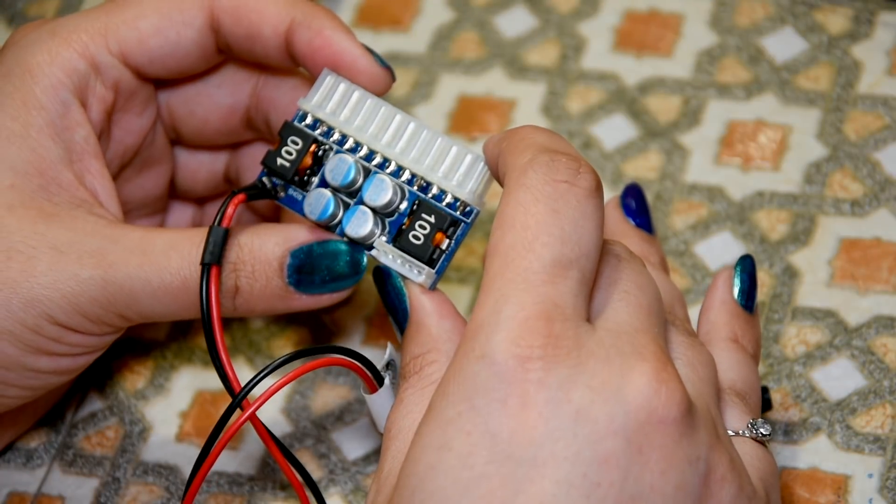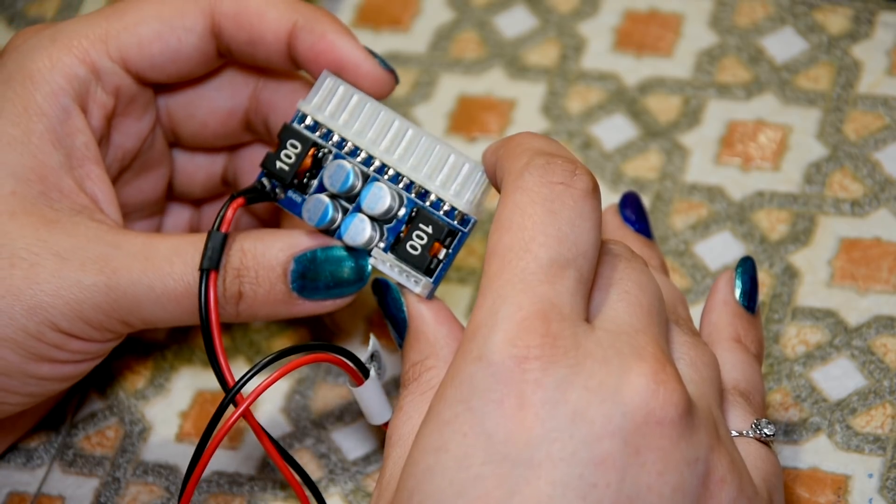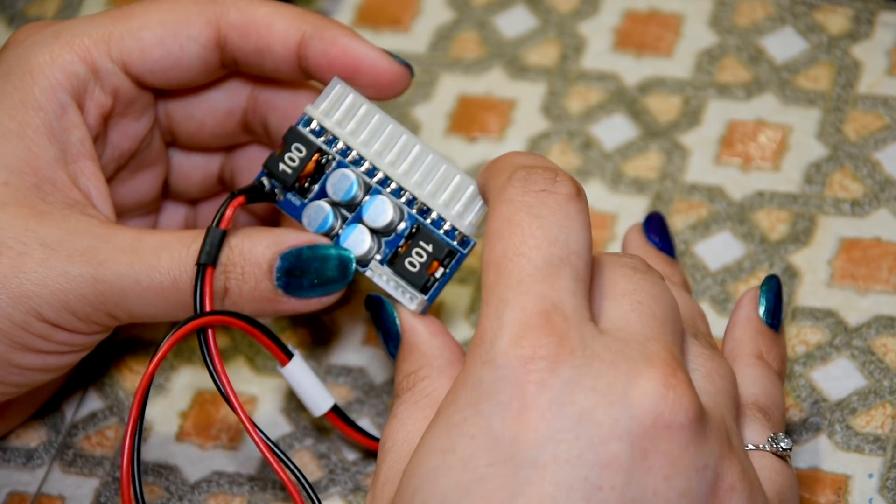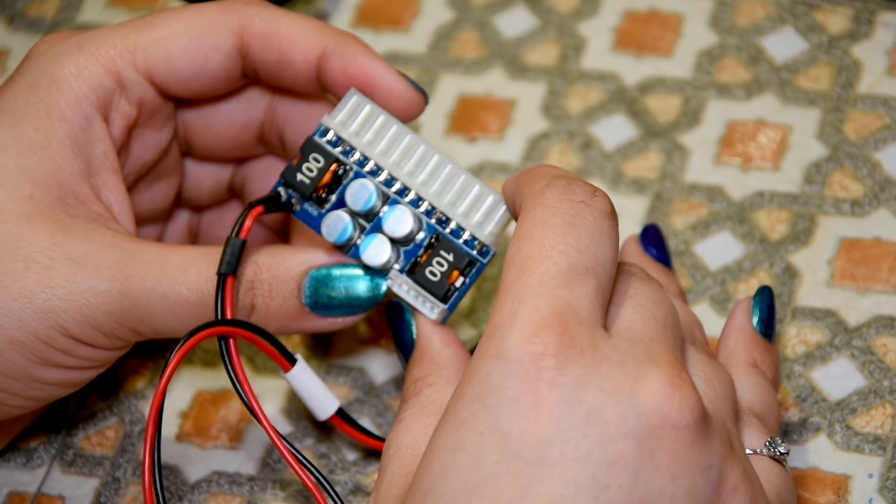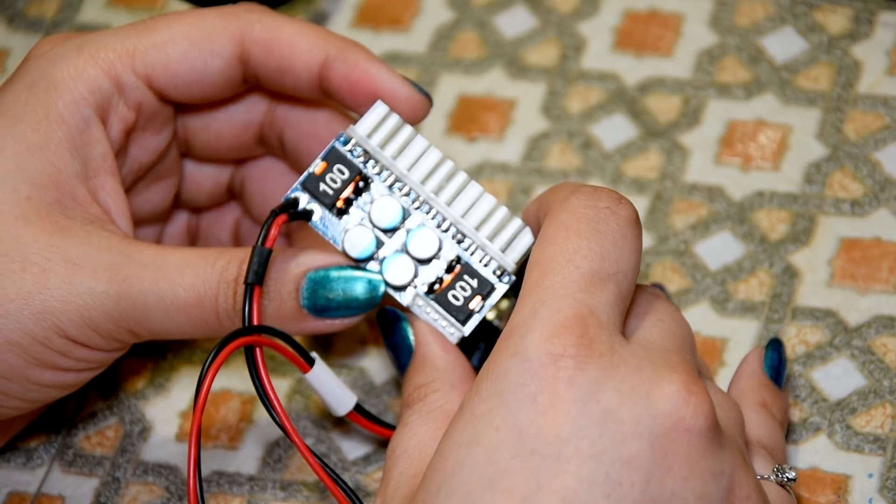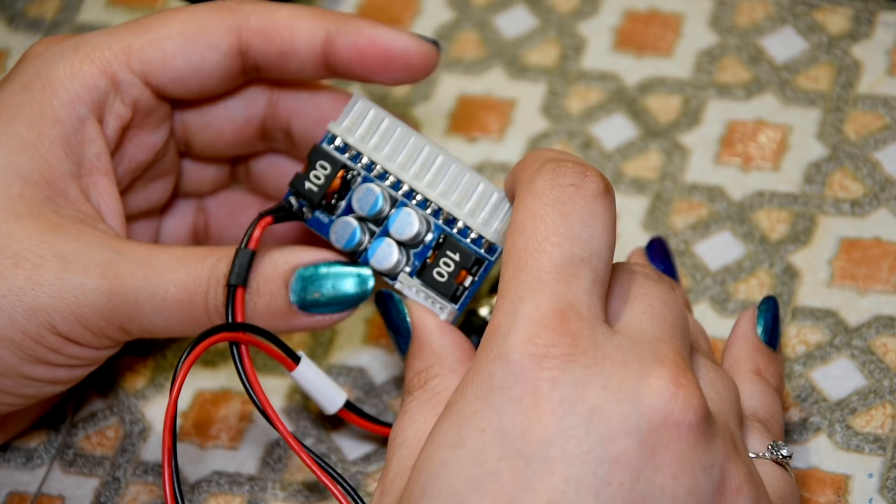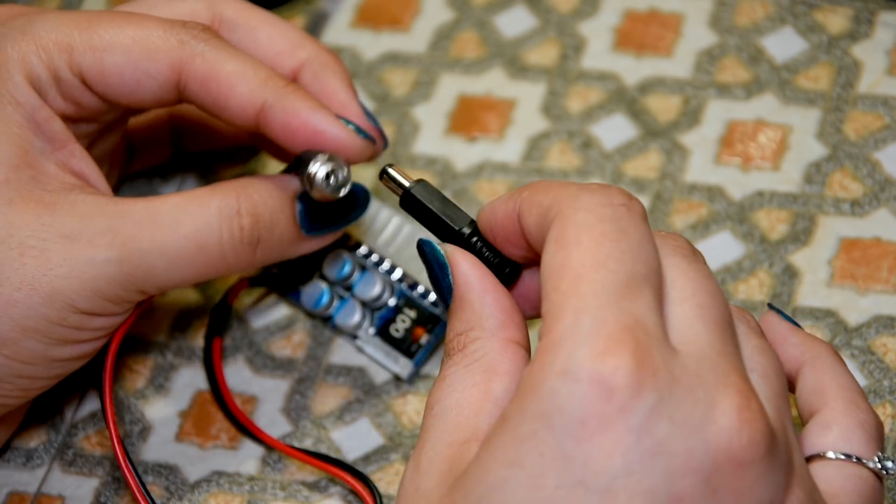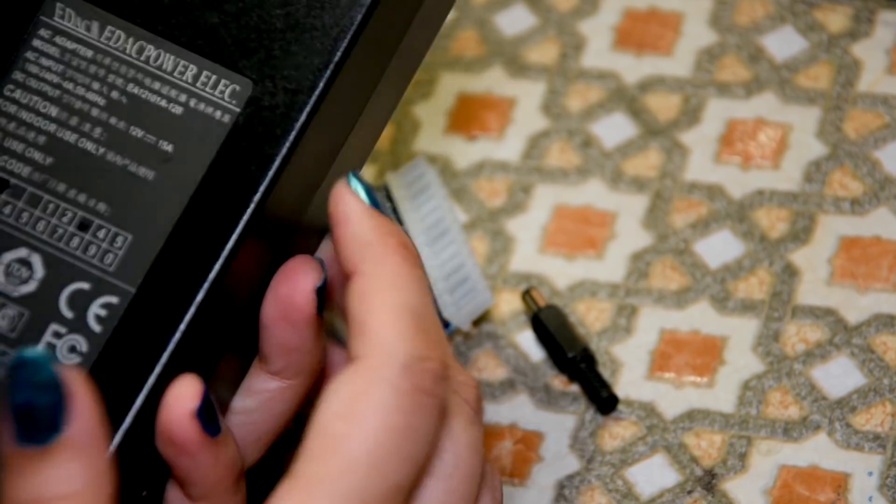Now this particular PSU is 160 watts, which I believe is the highest you can get. I got this because it was around the same price as the lower wattage ones. For the Amiga, I think 100 watts or 90 watts will be fine. You'll need a power brick which gives you adequate power. The one I have is 12 volts and 15 amps, which will give more than enough.